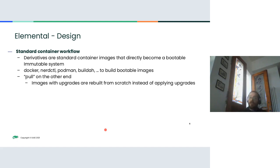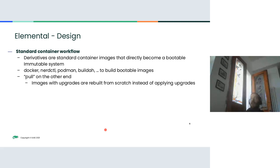This is very tied to standard container workflow. Containers are de facto standard images that become immutable systems which are bootable. The framework allows you to upgrade from and run that image. For building, you use standard tooling — RCTL, Podman Builder, whatever you use to manage containers. On the node end, it will just pull that image and apply it to the system. When talking about upgrades, we are talking about images rebuilt from scratch — vanilla images which are installed and swapped onto the running system. There is no state; the only state is the image you are swapping into.